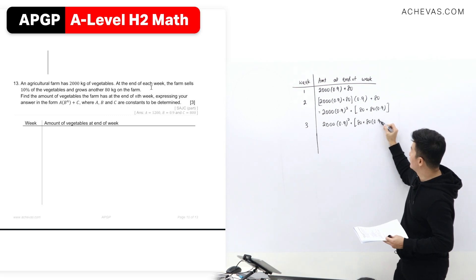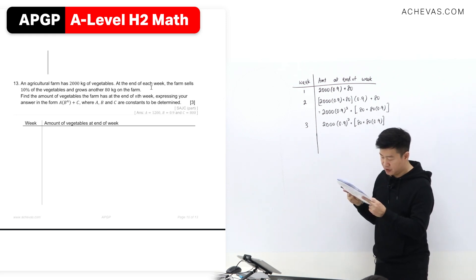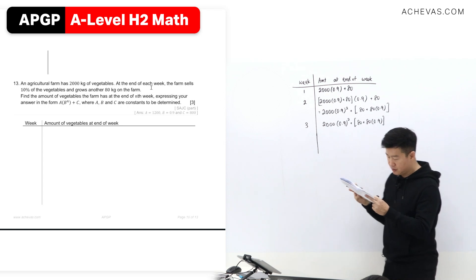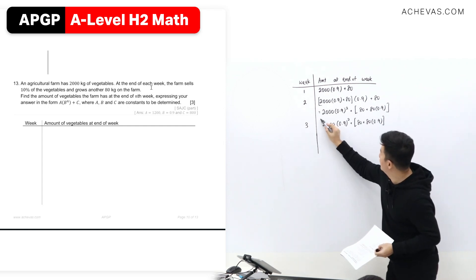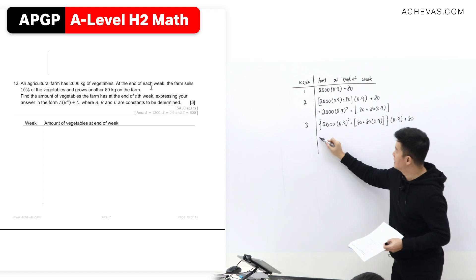This was from the previous month. And from here, according to the question, from the previous month, then 10% is going to be sold and 80 is going to be grown. If I were to multiply this in,